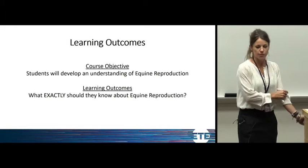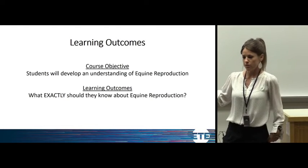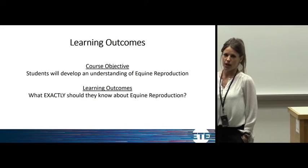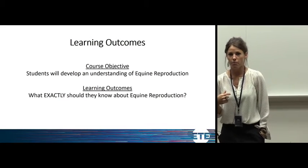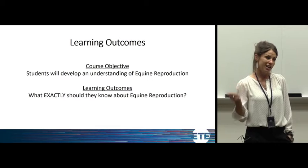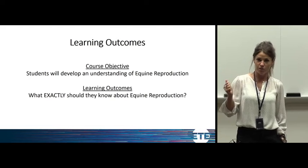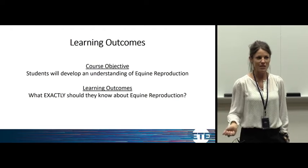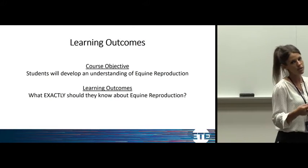A course objective is very broad — usually my course objectives are my course units. One example in Animal, Dairy, and Veterinary Sciences is: students will develop an understanding of equine reproduction. The interesting thing is we have two courses that cover equine reproduction: my ADVS 2190 class covers it briefly, and ADVS 4420 is an entire applied equine reproduction course. That same course objective could exist on both syllabi, so you can see how broad it is.